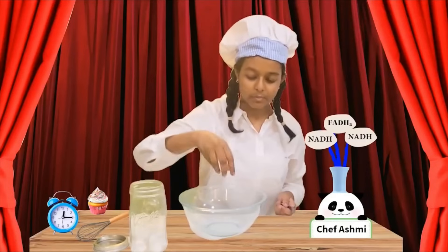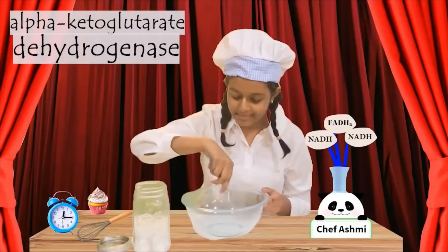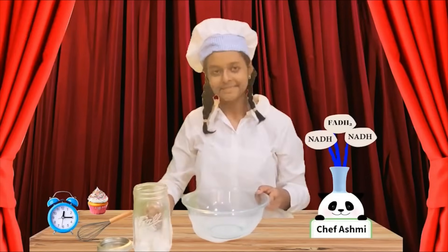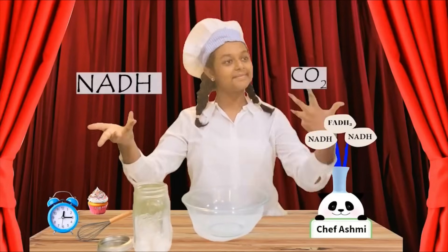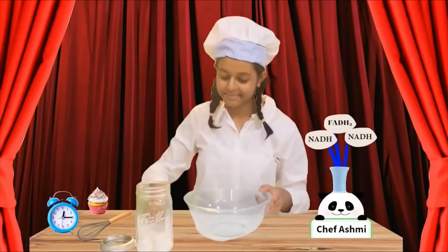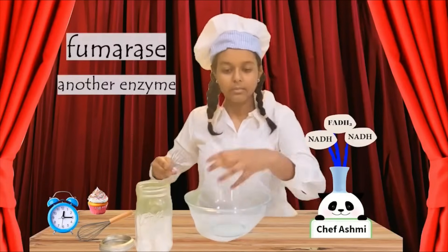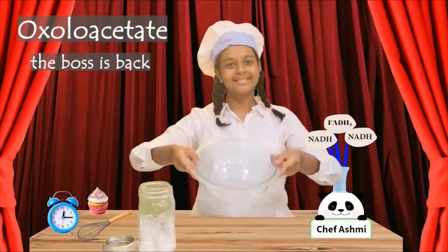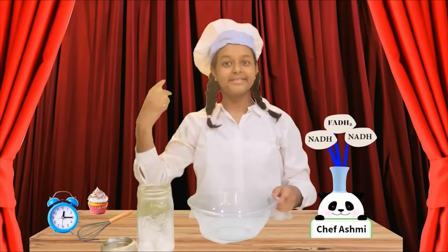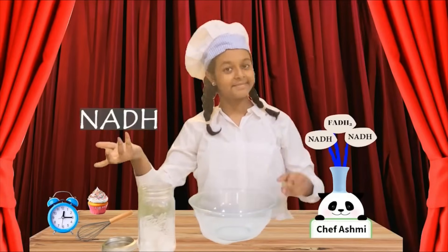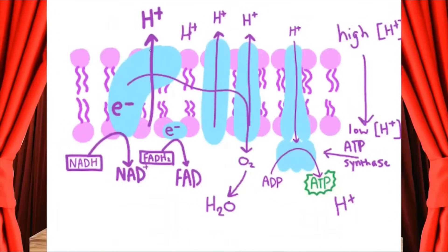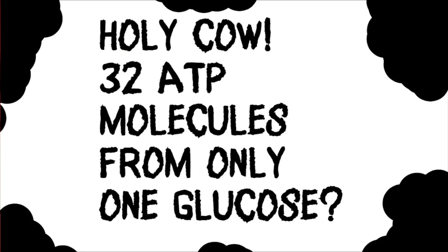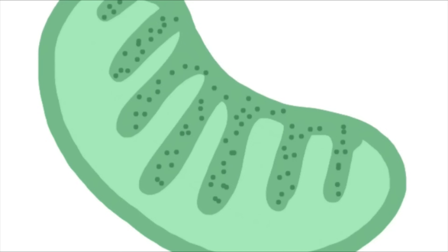We keep going with another enzyme, alpha-ketoglutarate dehydrogenase. We create another NADH and another carbon dioxide. We continue with a few more quick steps until, with the help of fumarase, our dish becomes malate, and then it's back to our starting molecule, oxaloacetate. High-energy electrons from NADH and FADH2 power the electron transport chain, which uses ATP synthase to create a large amount of ATP on the mitochondrial membrane.